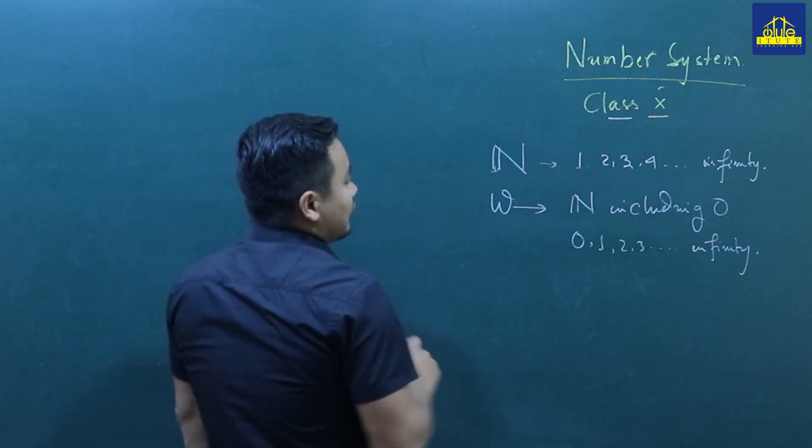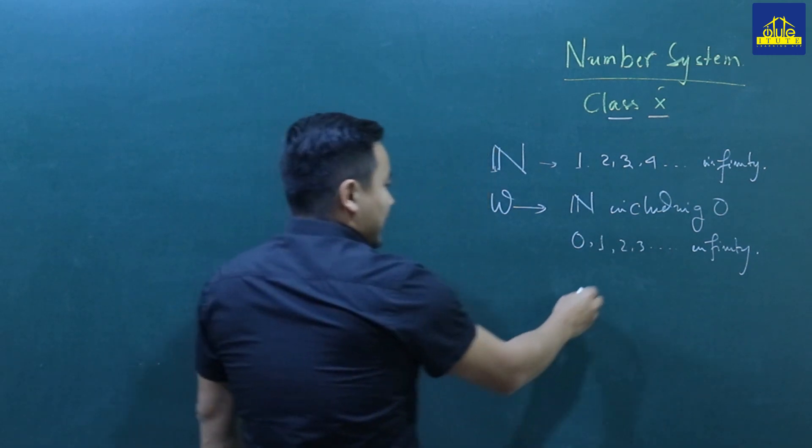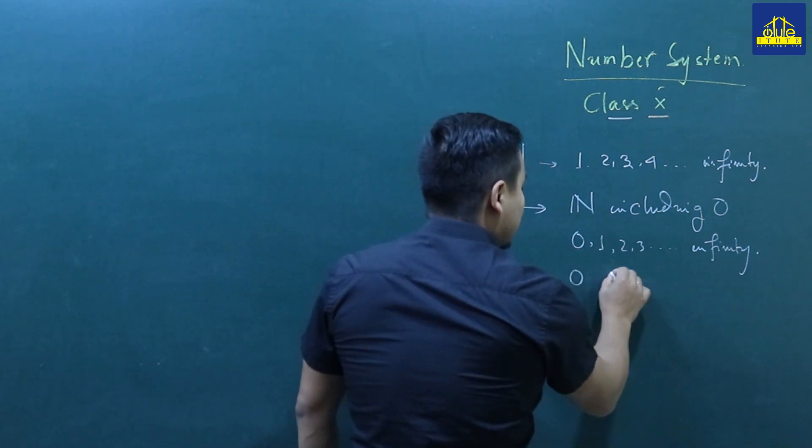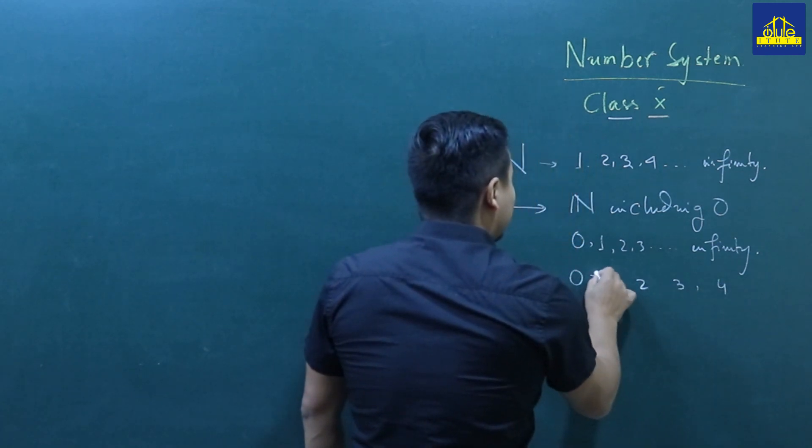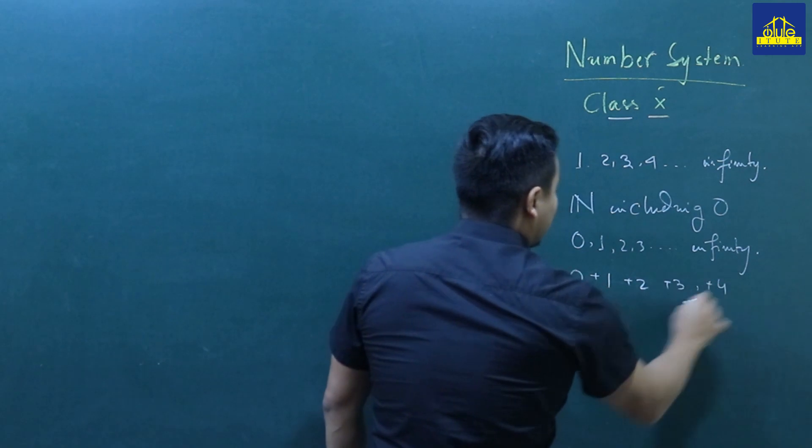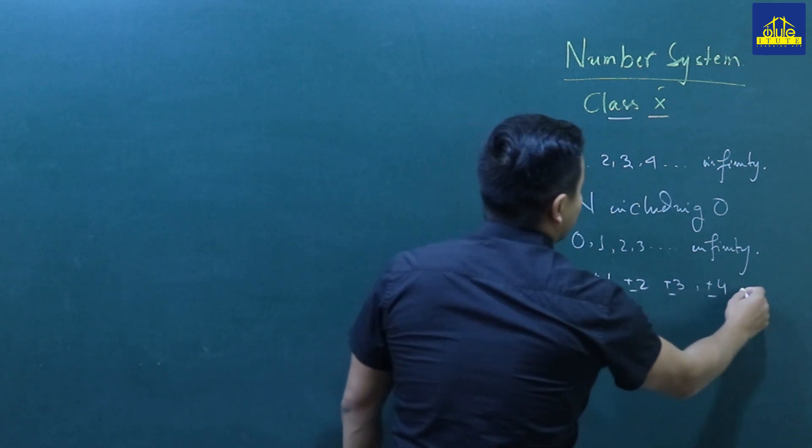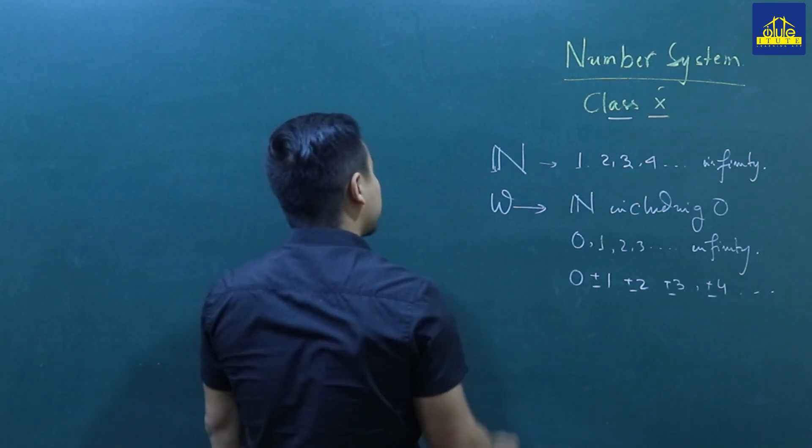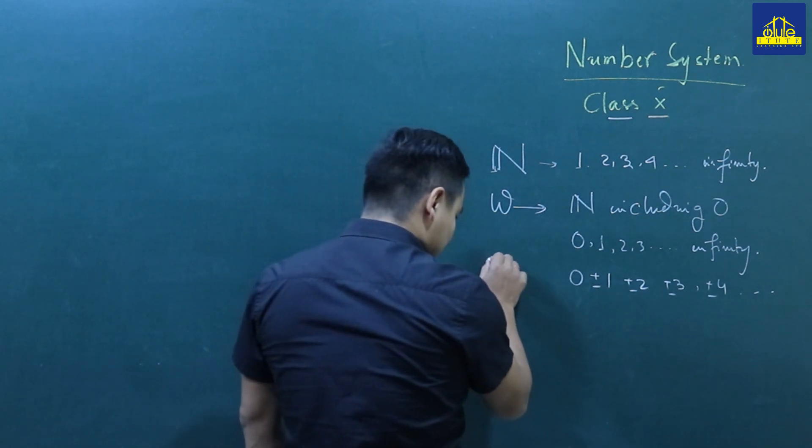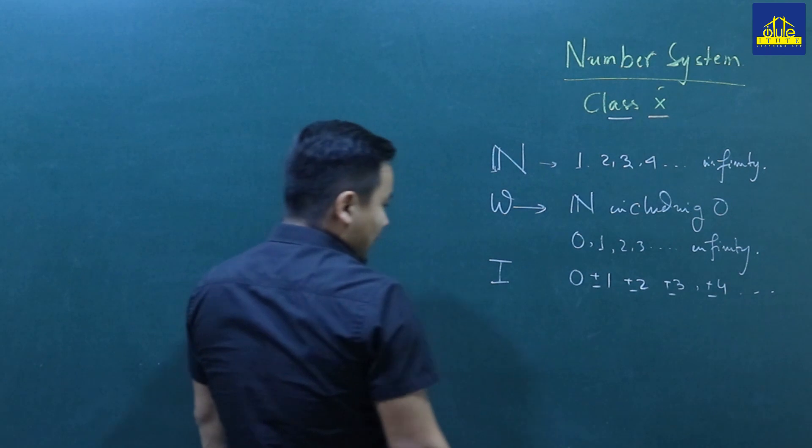Then we have integers. The integers include negative numbers, zero, and positive numbers: 1, 2, 3, 4, and also minus 1, minus 2, minus 3, minus 4. These are the integers.